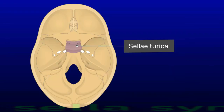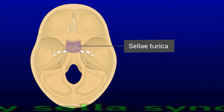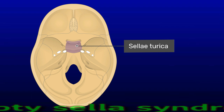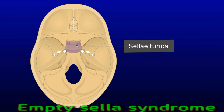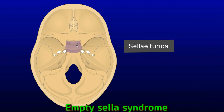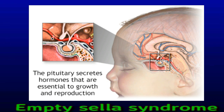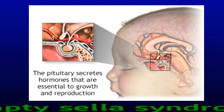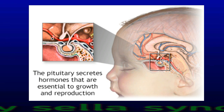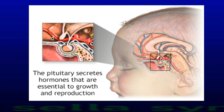Empty Sella Syndrome. The sella turcica is a bony structure surrounding the pituitary gland to protect it. Empty Sella Syndrome occurs due to an enlarged sella turcica. Symptoms may include erectile dysfunction, decreased sexual desire, and irregular menstruation. Primary Empty Sella Syndrome has no known cause and typically occurs more often in females who have obesity and high blood pressure. Secondary Empty Sella Syndrome may occur due to injury, genetic changes, radiation therapy, or surgery. If a person experiences symptoms, doctors may prescribe hormone replacement therapy to treat them.